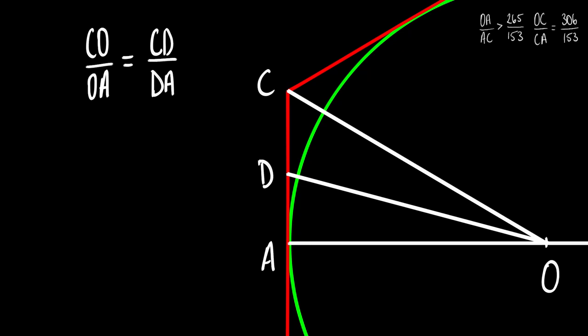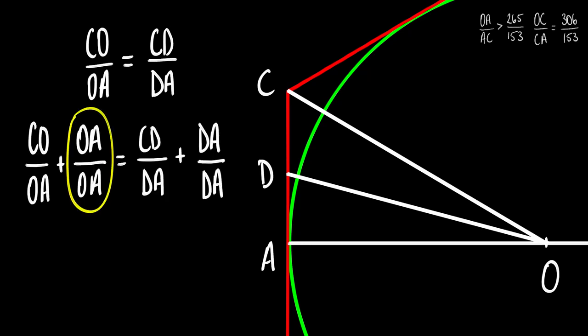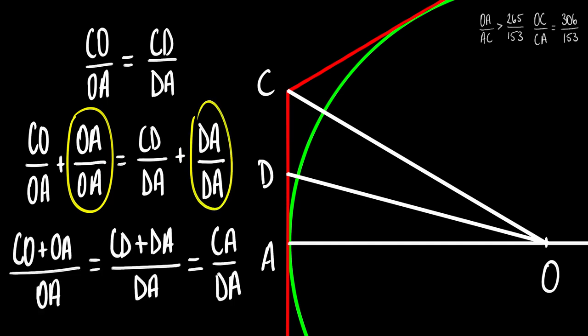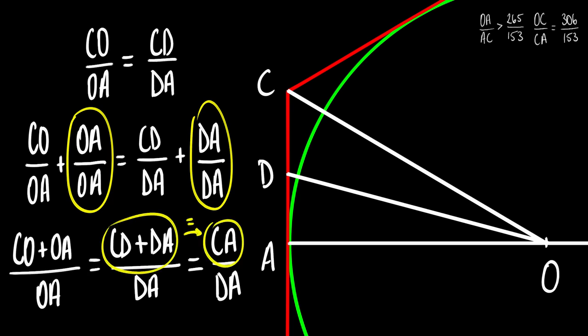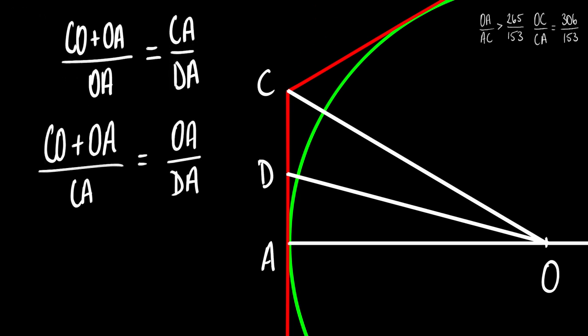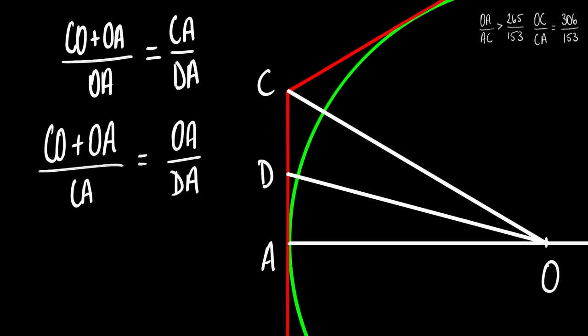Now, by adding 1 to both sides as ratios OA to OA for the left side and DA to DA for the right side, we get the ratios looking like this, which, when rearranging, we can put in this form. Well, we've now found the ratio OA to AD in terms of a ratio that we know.